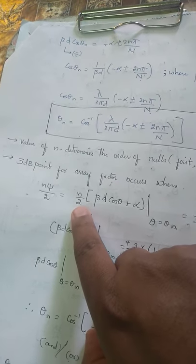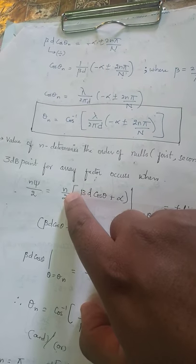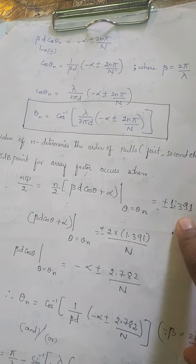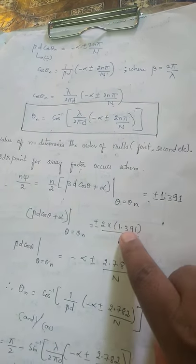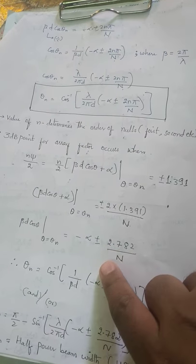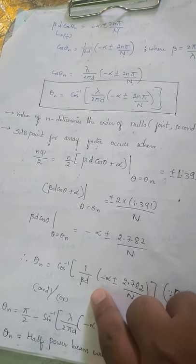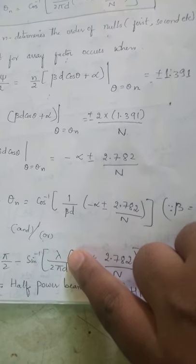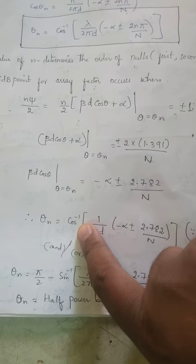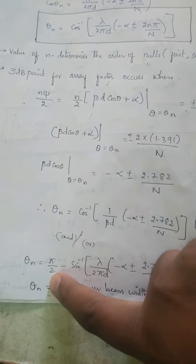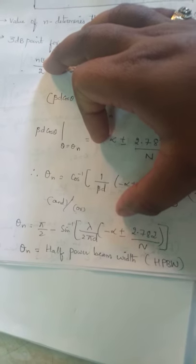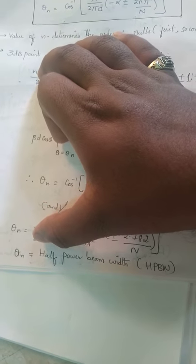Now assuming the whole factor N·chi/2 equals 1.391 — this is the constant ratio for the half-power point. Shifting terms: 2 times 1.391 / N gives 2.782 / N. Then alpha shifts over as minus alpha, and beta·d shifts, giving cos(theta) = cos_inverse of that factor. Since beta = 2·pi / lambda, we get theta_n. Since cos(theta) = sin(90° minus theta), we write the half-power beamwidth (HPBW) in terms of sine.